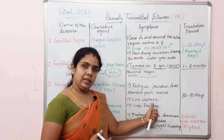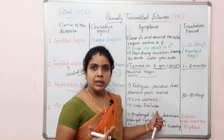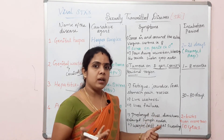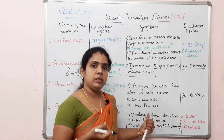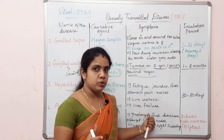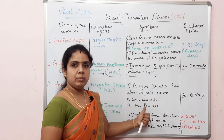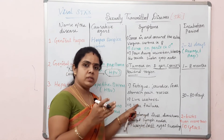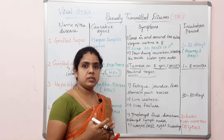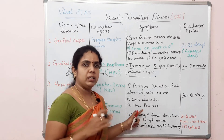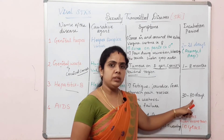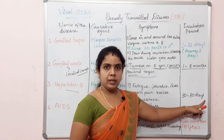If the liver is damaged in the final stage, scar tissue forms — this condition is called liver cirrhosis. This is the final stage of liver failure. In liver cirrhosis, the person can face liver failure and ultimately death. The incubation period is 30 to 80 days.